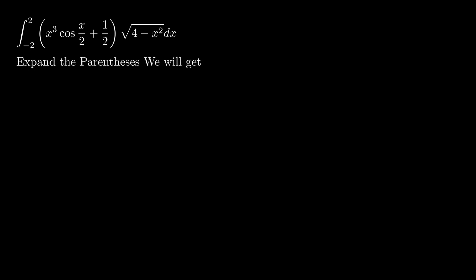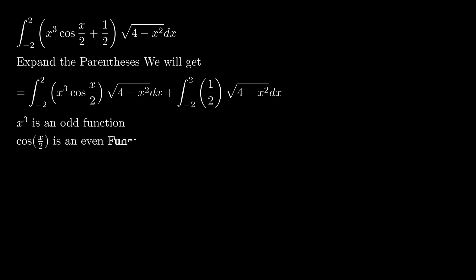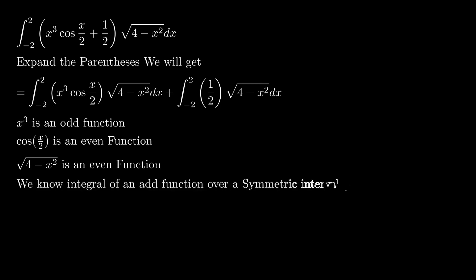Now what we are observing: x³ is an odd function, cos(x/2) is an even function, √(4-x²) is an even function, and x³ cos(x/2)√(4-x²) is an odd function.